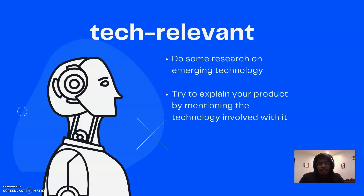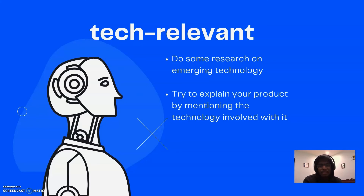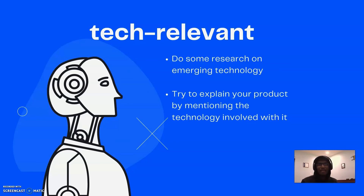You also want to make sure your project is tech relevant. Since the theme is emerging tech, these two go hand in hand — if you're following the theme, you're going to be following the tech aspect as well. Do some research on emerging technology and try to explain how your product is tech-driven, even if you might not actually know how to implement it. For example, AI and artificial intelligence, blockchain, APIs — you might not know how to do any of this, and that's totally fine, as long as you're able to explain it and connect it to your product. The more you can connect it, the more you show the judges you know about tech.